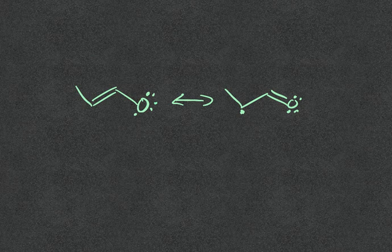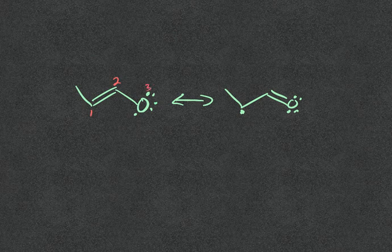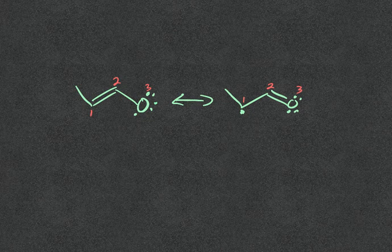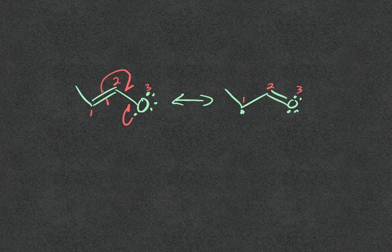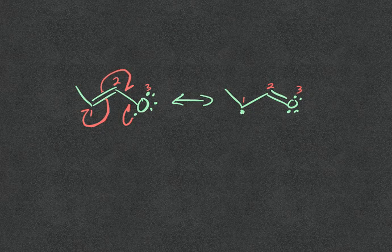The resonance forms are a little different - the pi bond is breaking. We number these positions one, two, three. We need to make a pi bond between two and three, involving one electron from the oxygen and one of the electrons from the pi bond. This electron is going to position one, which gets us to this resonance form.